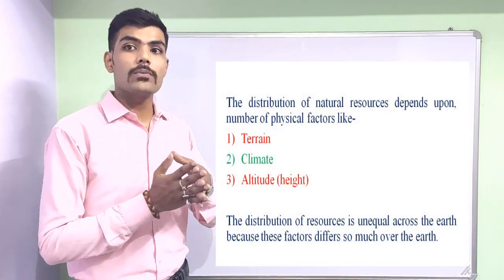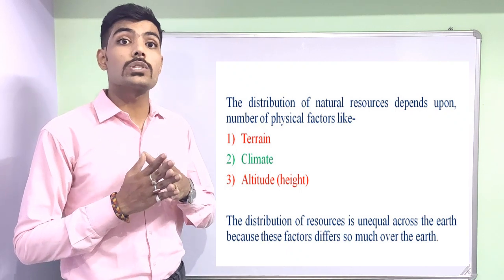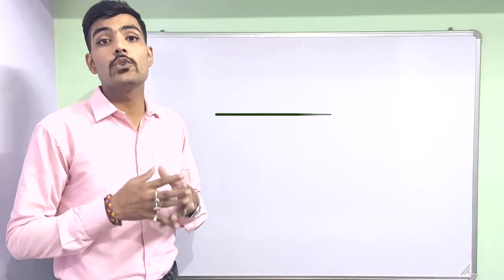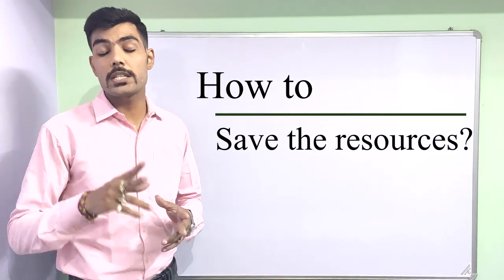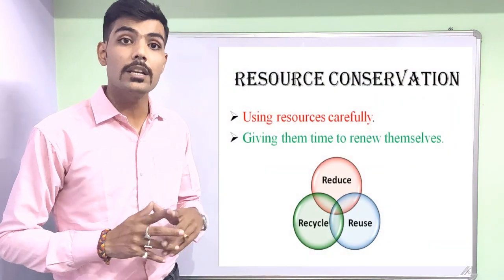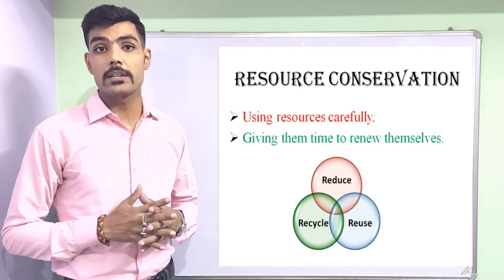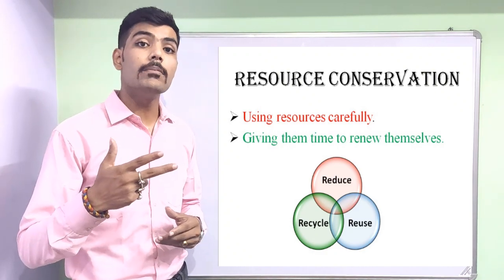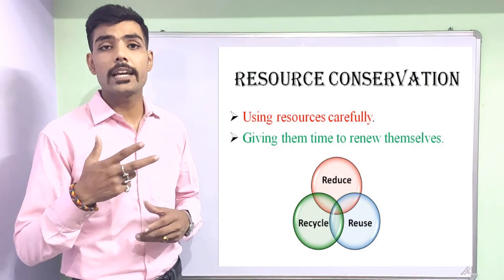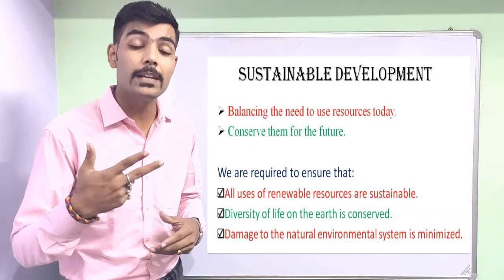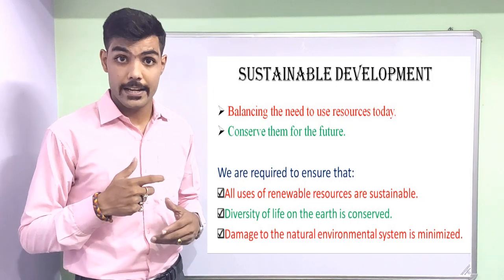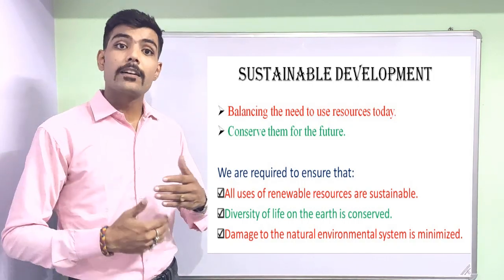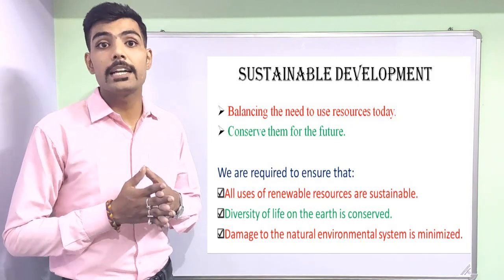After discussing the types of natural resources, let's discuss resource conservation. Because resources are very important to us, the question arises: how do we save them? There are two theories: resource conservation and sustainable development. Resource conservation talks about using resources carefully and giving them time to get renewed. Sustainable development says to balance the needs of today — fulfill present needs while also conserving resources for the future. Utilize things today and conserve them for the future as well.